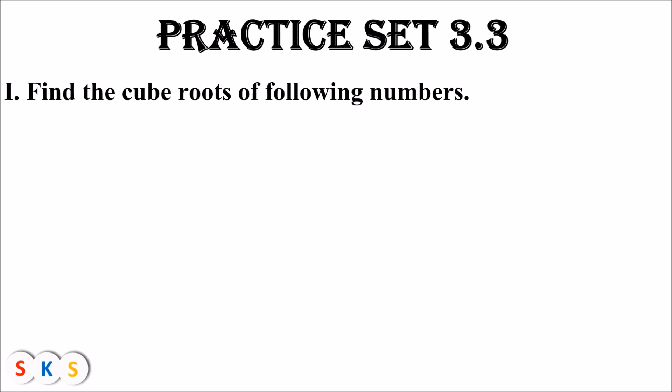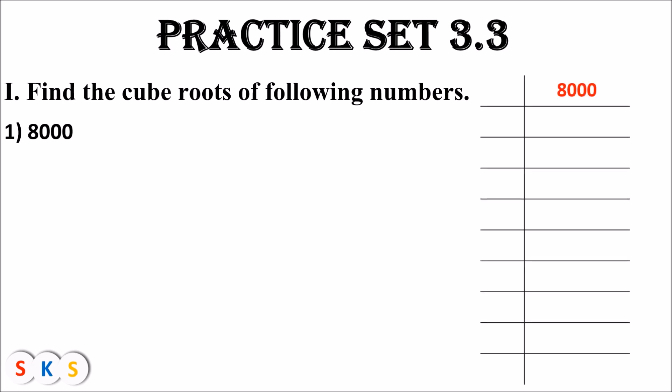Practice Set 3.3: Find the cube root of the following numbers. The first question is 8000. The first step is to find the prime factors of 8000. Prime numbers are numbers divisible only by themselves and 1, like 2, 3, 5, 7, 11, 13. The smallest prime number is 2, and since the last digit of 8000 is 0, it is divisible by 2. Dividing 8000 by 2 gives 4000.